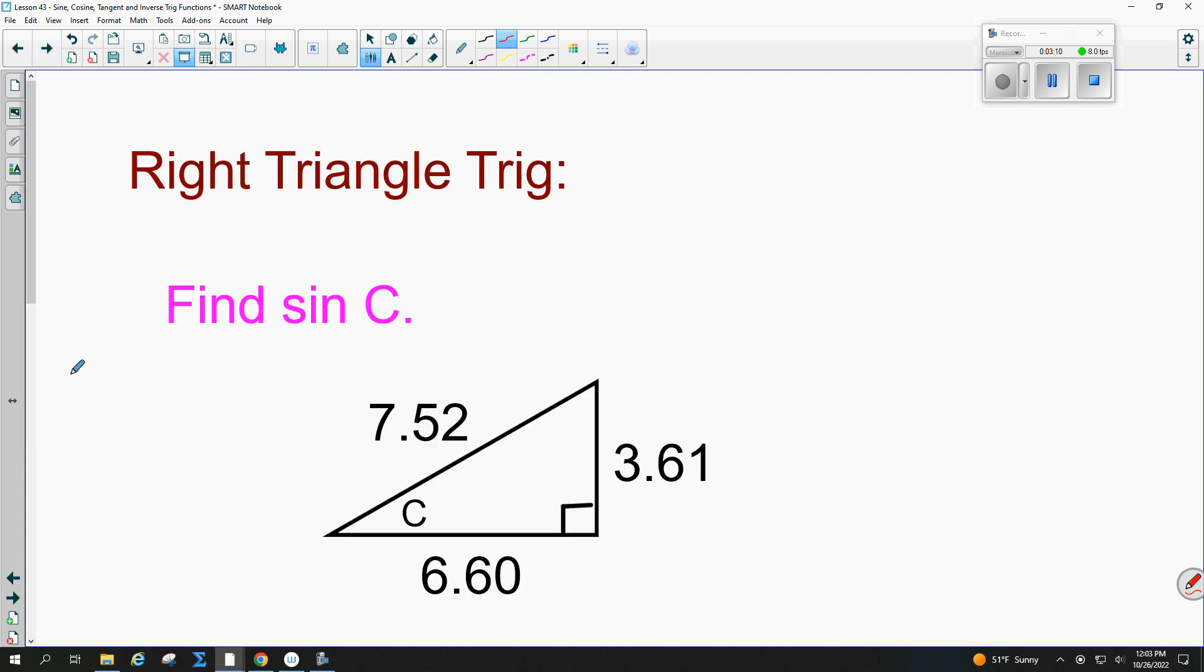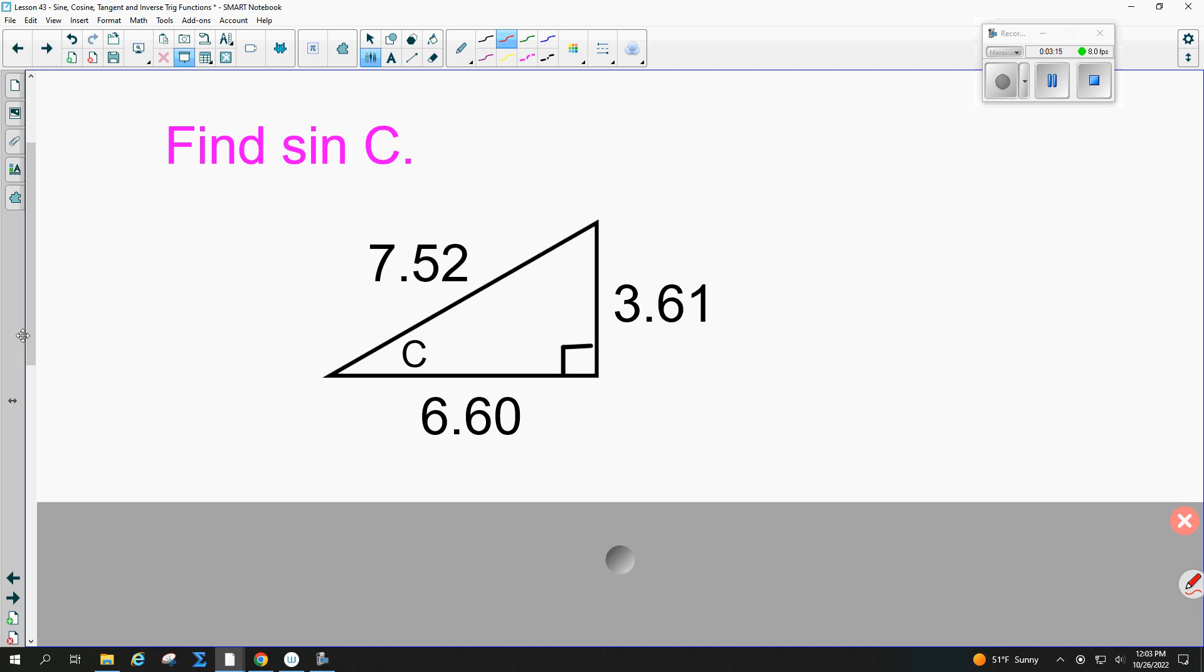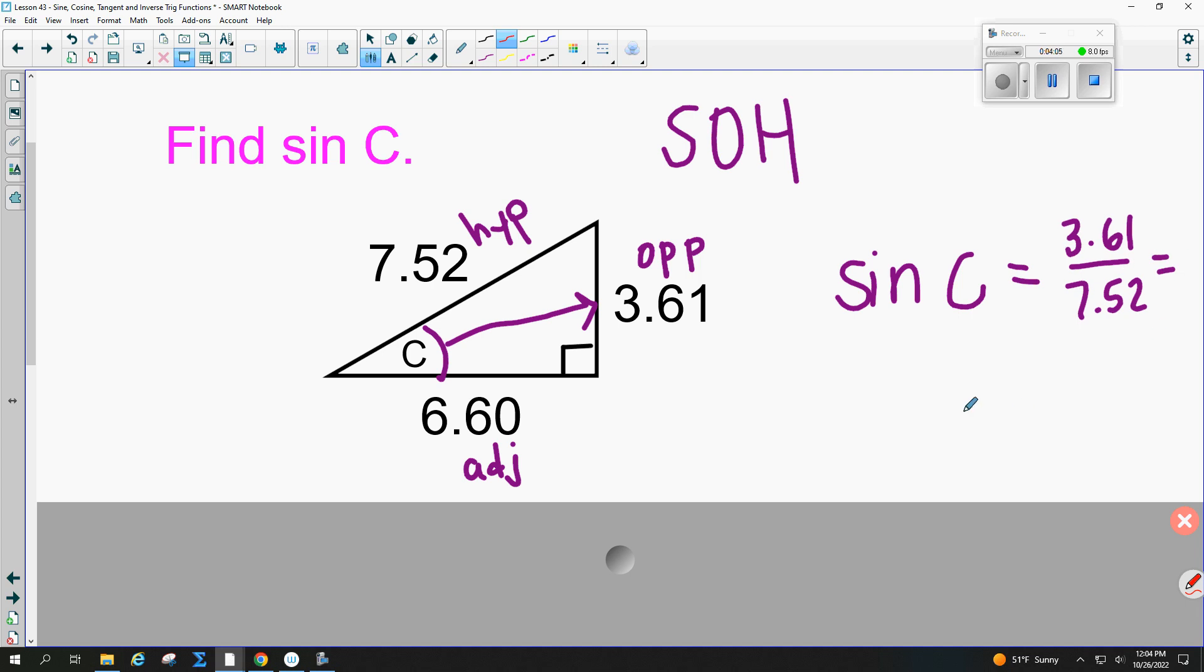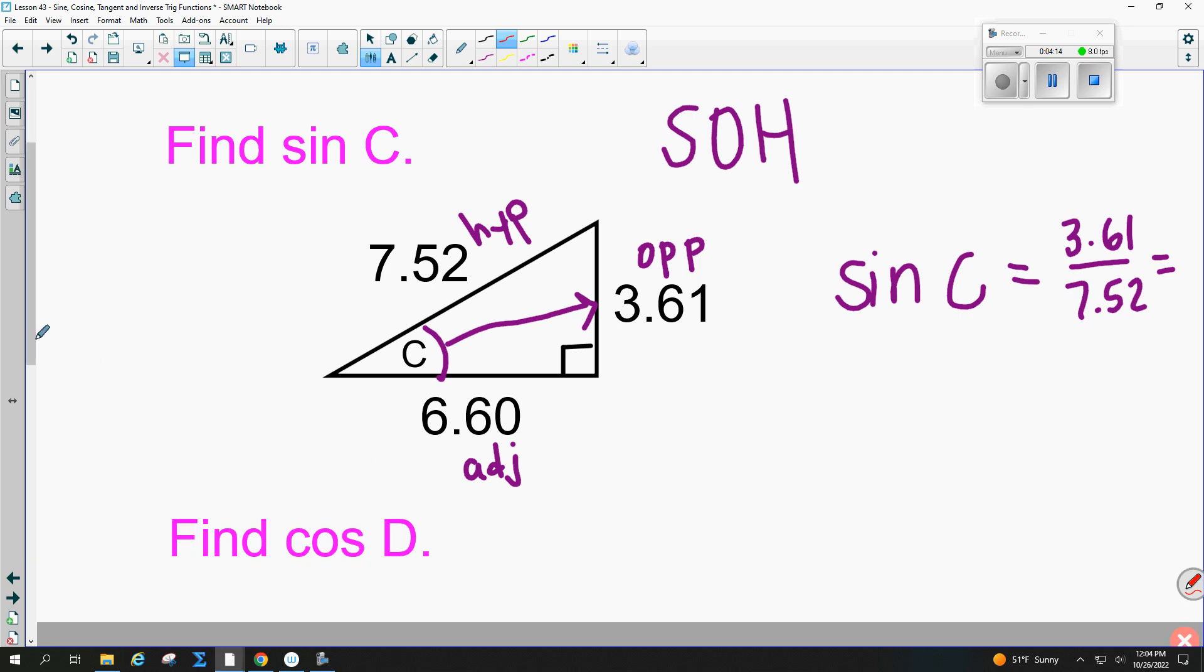Find sine of C. So I have this lovely triangle. First I write sine C. By the way, it's not sin, it's sine C. If this is C, this side right here is the opposite, this side down here is the adjacent, and this side here is the hypotenuse. So sine of C is equal to opposite over hypotenuse. The opposite side would be 3.61 over the hypotenuse side 7.52. You could divide those on your calculator. Main thing is that you know it's SO.